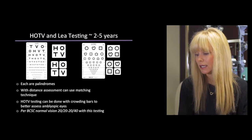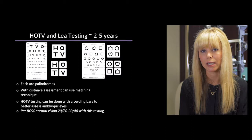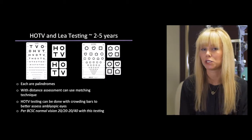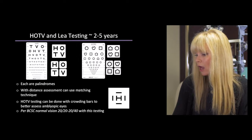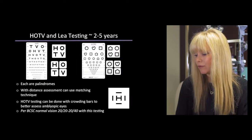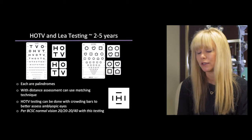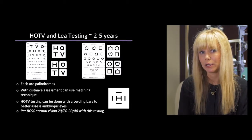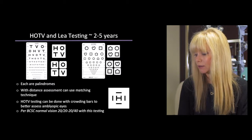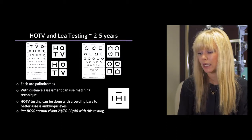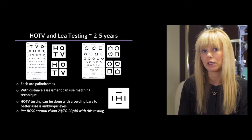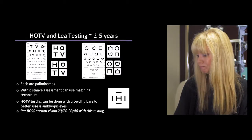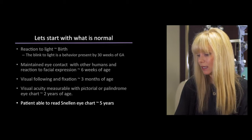Using HOTV and LEA testing methods, similar to Allen cards, we would expect normal vision to measure about 20/20 to 20/40 with distance vision testing. An additional advantage: if you have concern about a preferred eye that might indicate amblyopia, you can use a crowding bar phenomenon with these modalities, which more accurately represents the true visual acuity of a potentially weaker eye. That's another reason this testing is helpful.